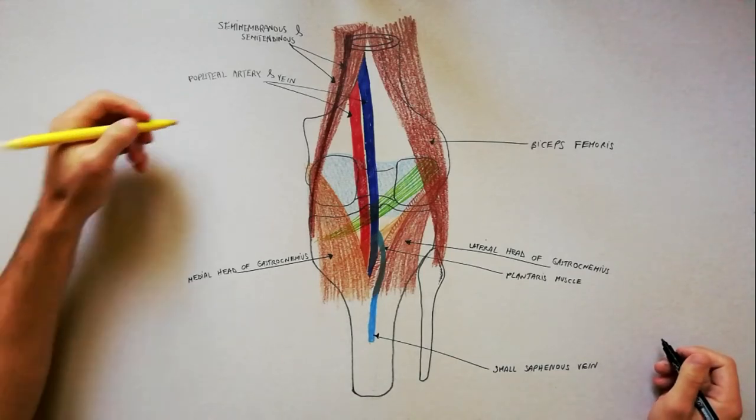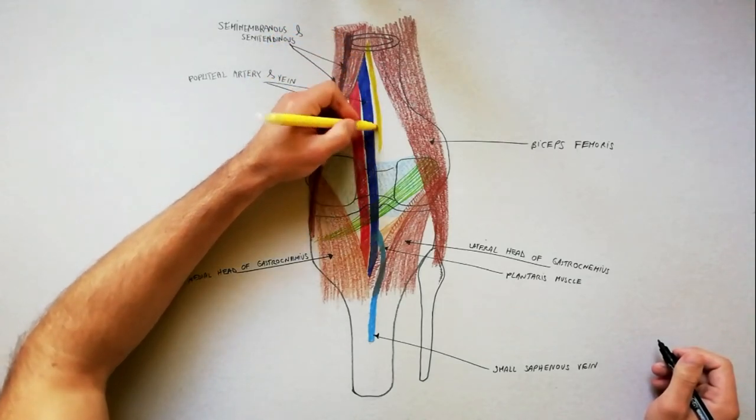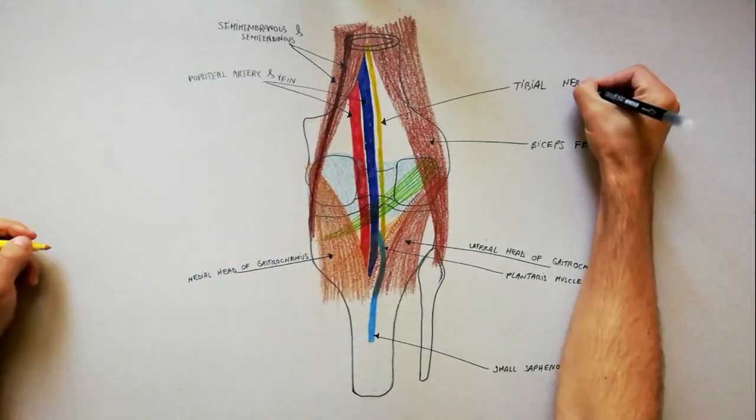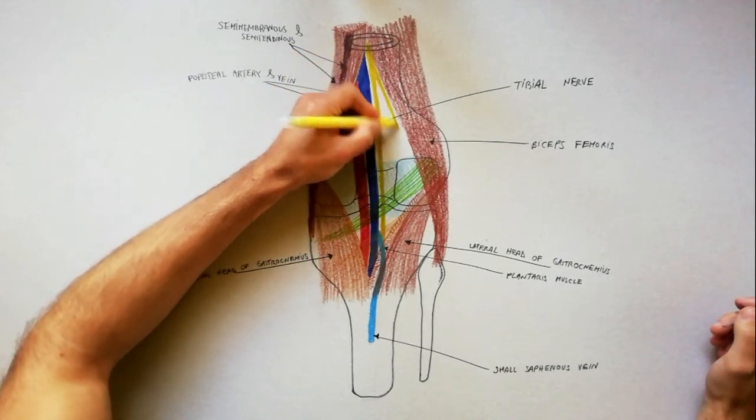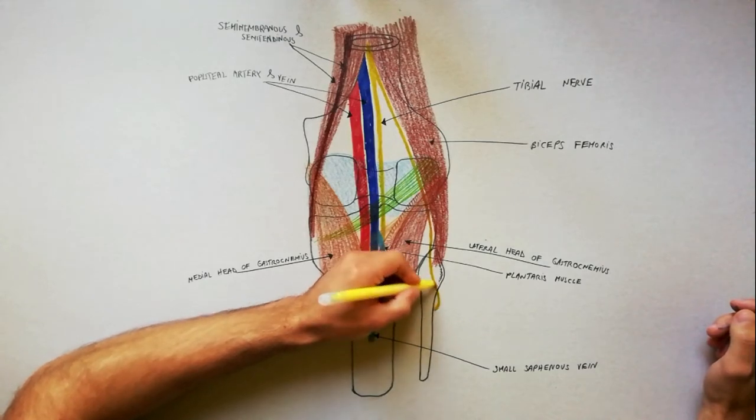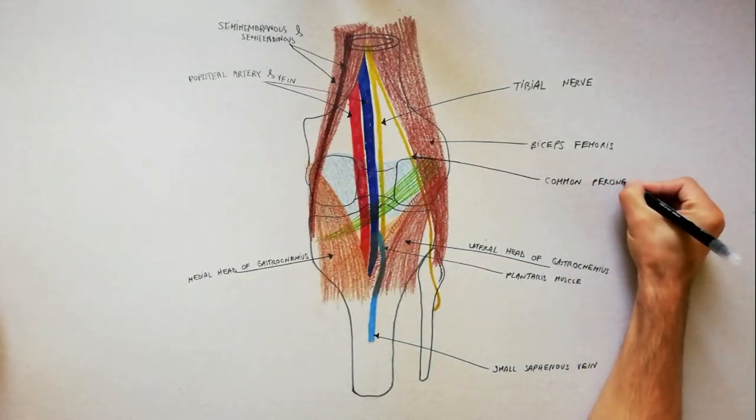The tibial nerve is placed lateral and superficial to the popliteal vein. The common peroneal nerve runs in close relation with the medial margin of the long head of biceps femoris and then wraps around the neck of the fibula.